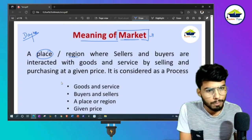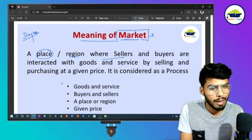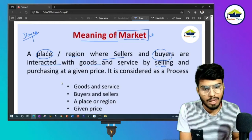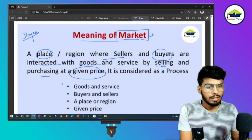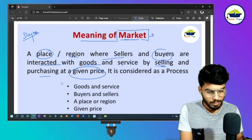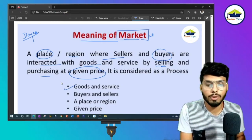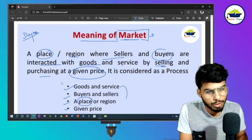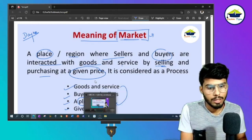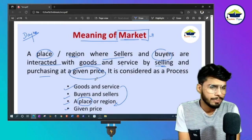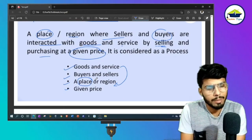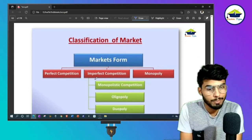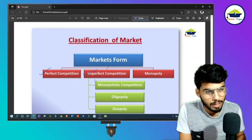Market is a place where sellers and buyers interact with goods and services by selling and purchasing at a given price. This is a process involving goods and services, buyers and sellers, at a particular place. From an exam point of view, we have three markets: perfect, imperfect, and monopoly.